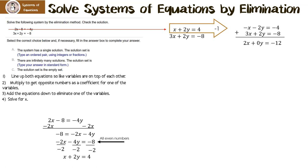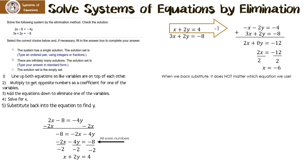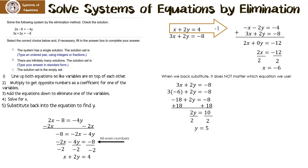Now I have to solve for x. I have 2x equals negative 12. I divide by 2 on both sides, which gives us x equals negative 6. Now I have to back substitute to find y. When we back substitute, it does not matter which equation we use. I decided to use the second one. Since x is negative 6, I put negative 6 in for x. 3 times negative 6 is negative 18. I add 18 to both sides, giving 2y equals 10. Then I divide by 2, and y equals 5.